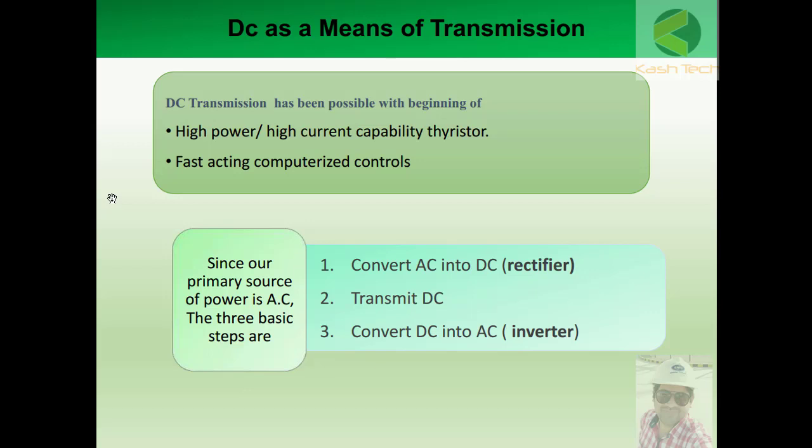Also, with the advent of fast-acting computerized controls, all these factors make DC transmission systems possible. Since our primary source of power is AC, the first of three basic steps for DC transmission is to convert AC supply to DC — this is called rectification.